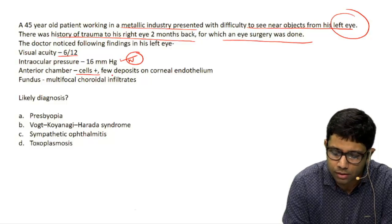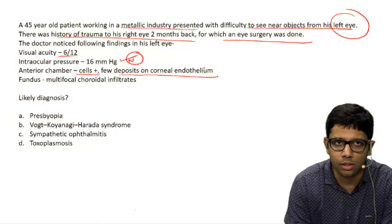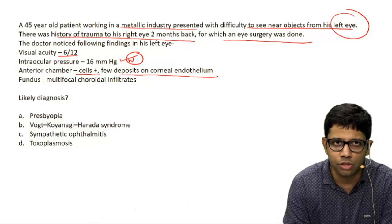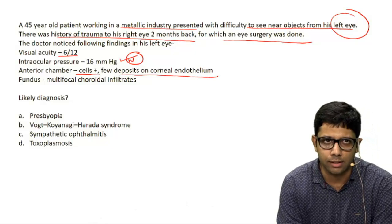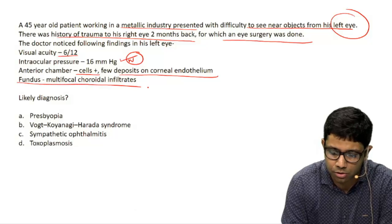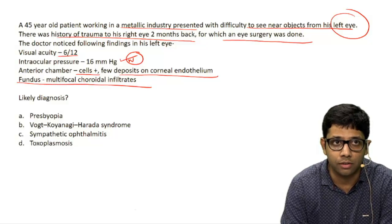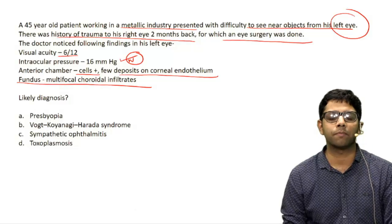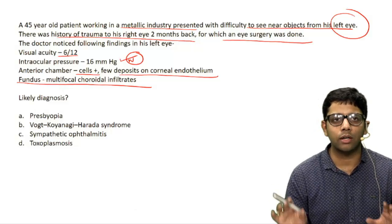The anterior chamber had few cells and few deposits on the corneal endothelium — deposits on the corneal endothelium known as keratic precipitates. On retina and fundus examination, multiple choroidal infiltrates were present. What is the likely diagnosis?